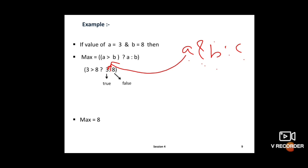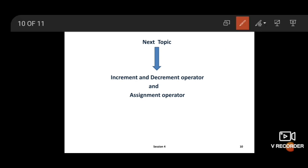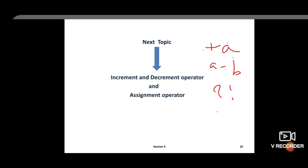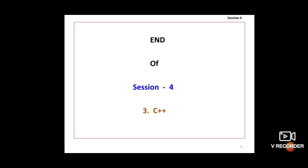Understood? Three subtypes in arithmetic operators: unary operators need only one operand, like +A. Binary operators need two operands, like A - B. Ternary operators use question mark and colon. Next topic is increment and decrement operator and assignment operator, which we will see in the next lecture. Okay, student. Thank you.